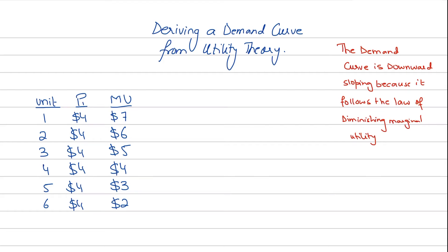Hi guys, I hope you're doing well. In this video we're going to be discussing how to derive a demand curve from the utility theory. We've already established the condition in the previous videos that rational consumer behavior, or consumer equilibrium for a single commodity, occurs whenever price is equal to marginal utility — the utility you derive from consuming a good is equal to the price you're paying for it. So if you're incurring an expense of $4, you're also incurring a utility of $4. This is basically consumer equilibrium for one particular good.